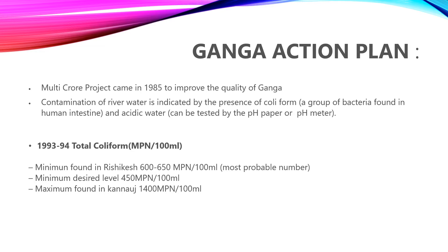At Rishikesh the coliform count is 600 to 650, which means the water is quite clean there. At Kannauj, the maximum number recorded was 1400. Based on this MPN number, the purity or contamination of river water is determined.